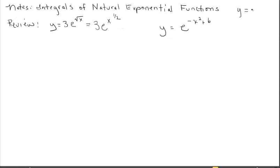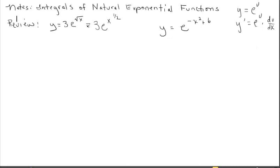If we have a natural exponential function where the exponent is more complicated than x, the derivative is going to be the function itself — e to the u — times u prime, the derivative with respect to x of the exponent. Let's apply that formula for differentiation to these two review problems.